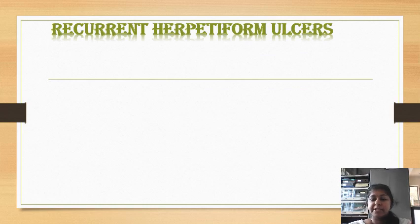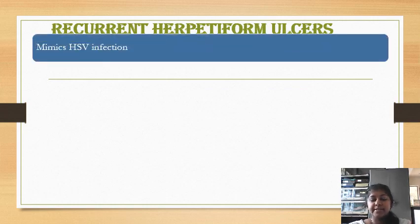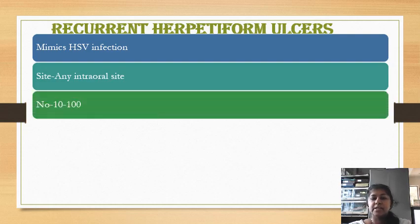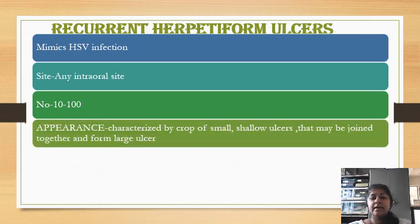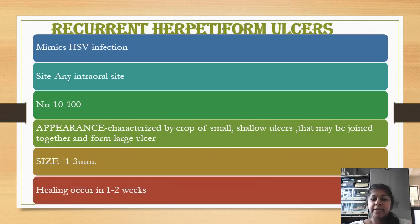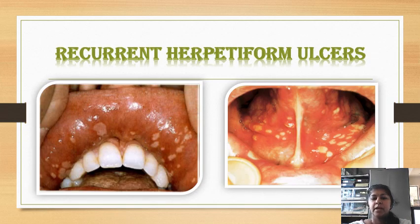Next is recurrent herpetiform ulcers. These are ulcers which mimic herpes simplex viral infection and can be seen on any intraoral site. The number is 10 to 100 — that is, crops of ulcers can be seen. These are characterized by small shallow ulcers that may join together to form a large ulcer. The size is very small, 1 to 3 mm, and they heal within 1 to 2 weeks.